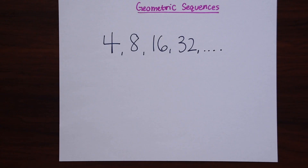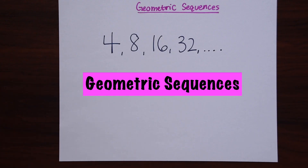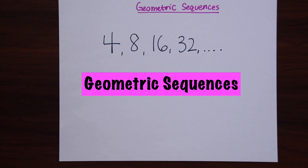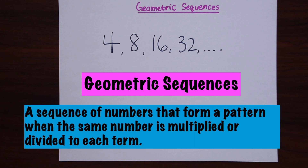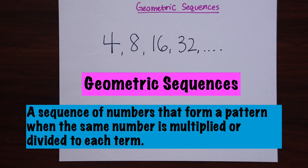So what are geometric sequences? Geometric sequences are a sequence of numbers that form a pattern when the same number is multiplied or divided to each term.